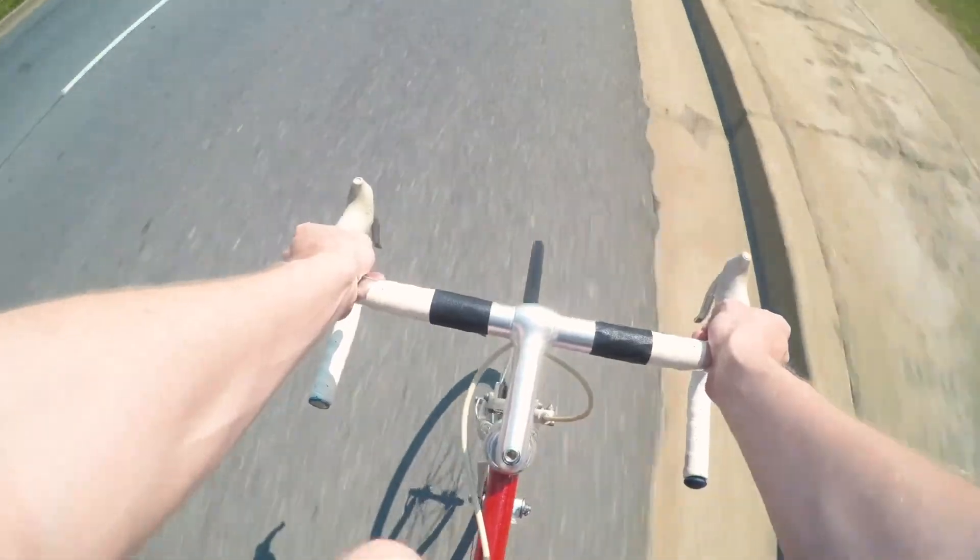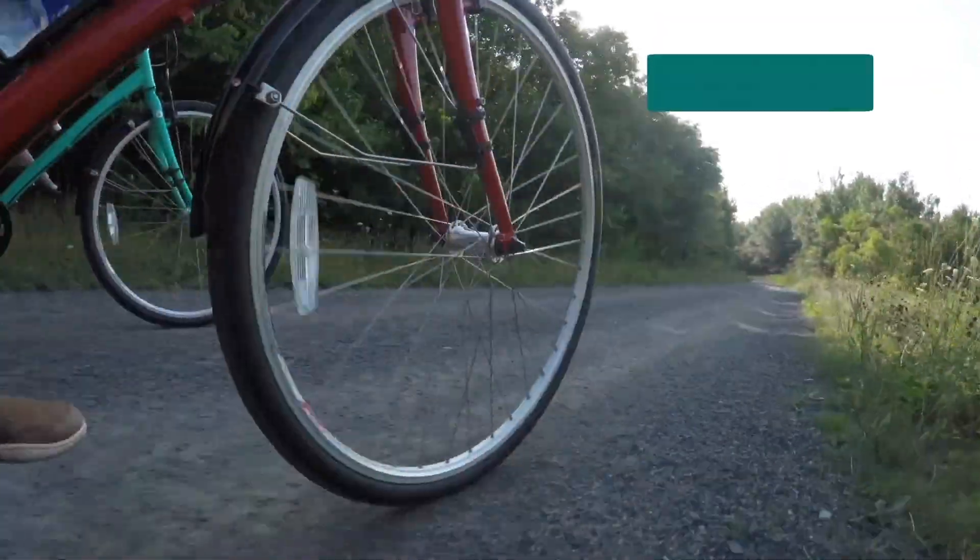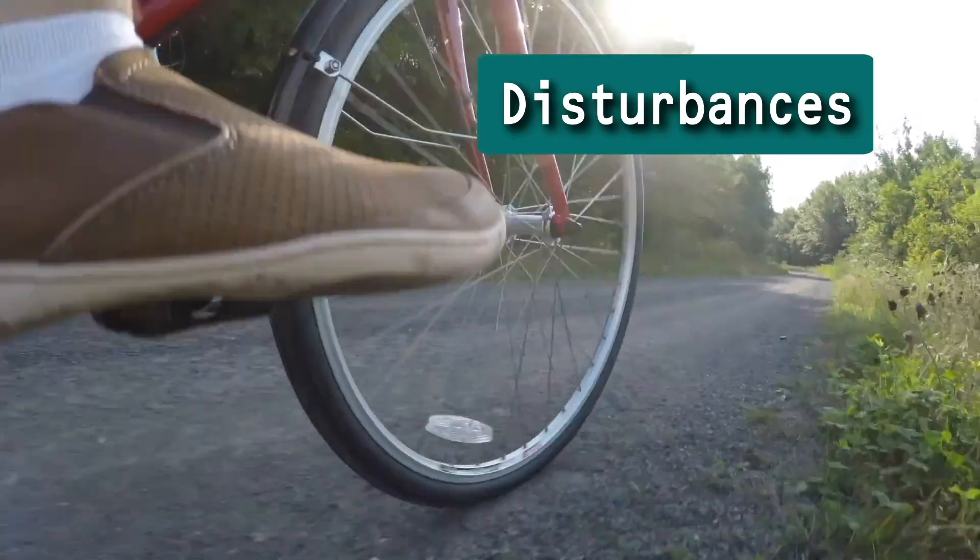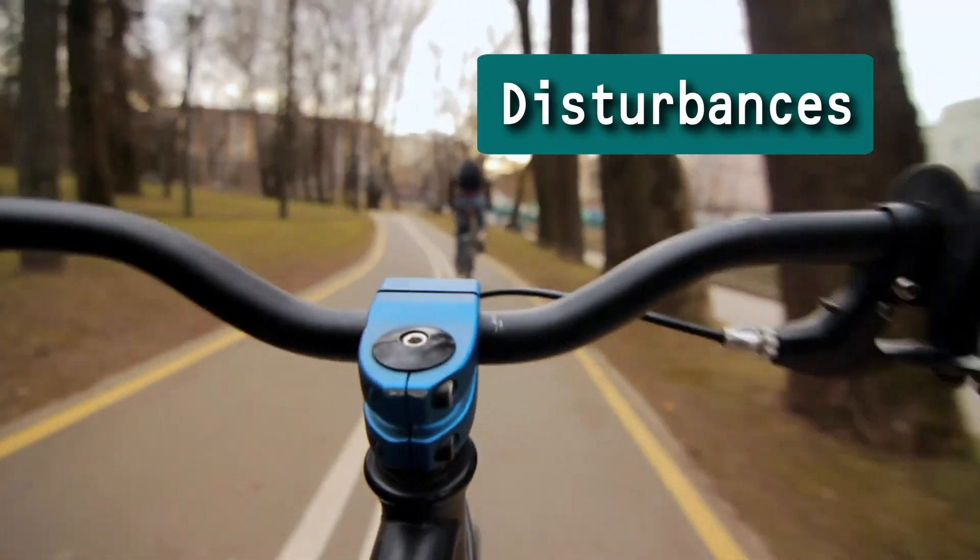As you ride along, potholes, sticks, and wind gusts all cause you to deviate from the path you want to be on. We call these outside influences disturbances. When you encounter a disturbance, you automatically correct by steering back toward the desired path. The robot needs to do the same thing with its controls.